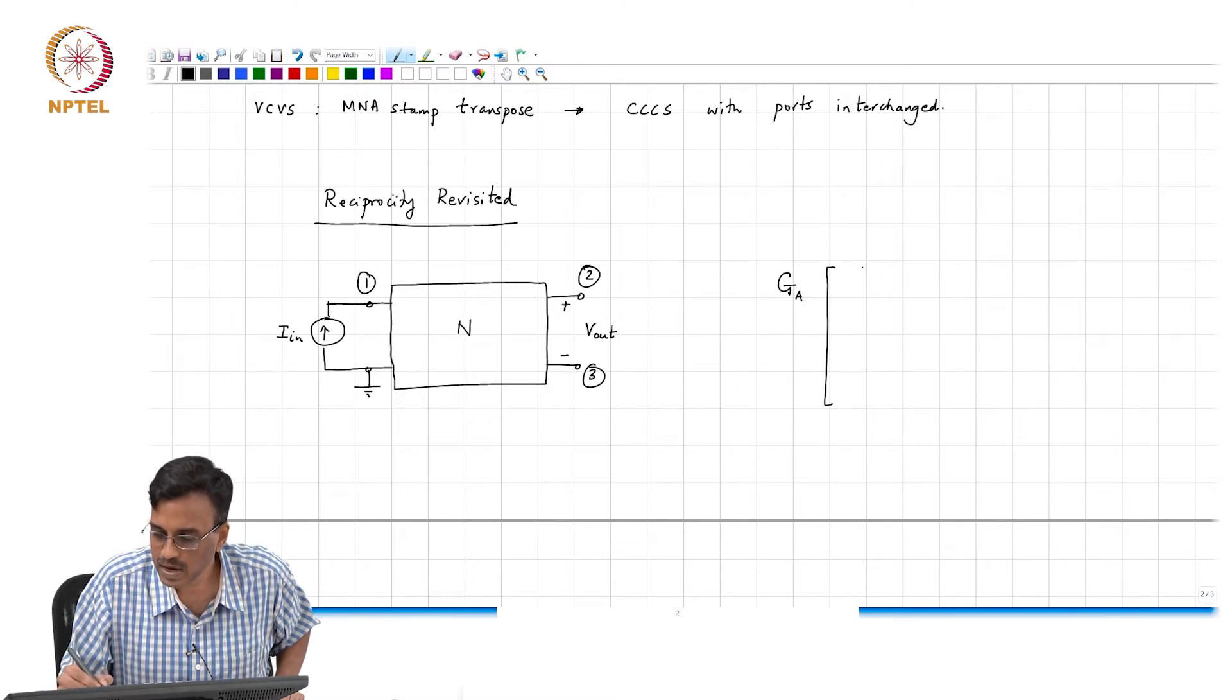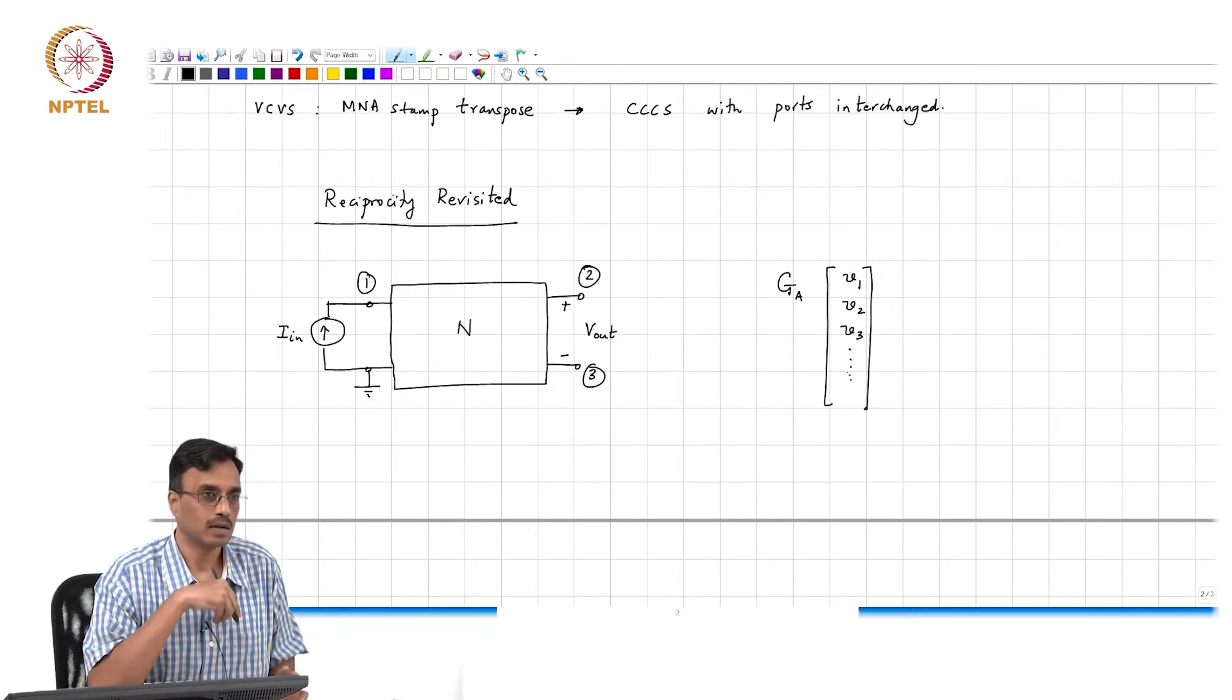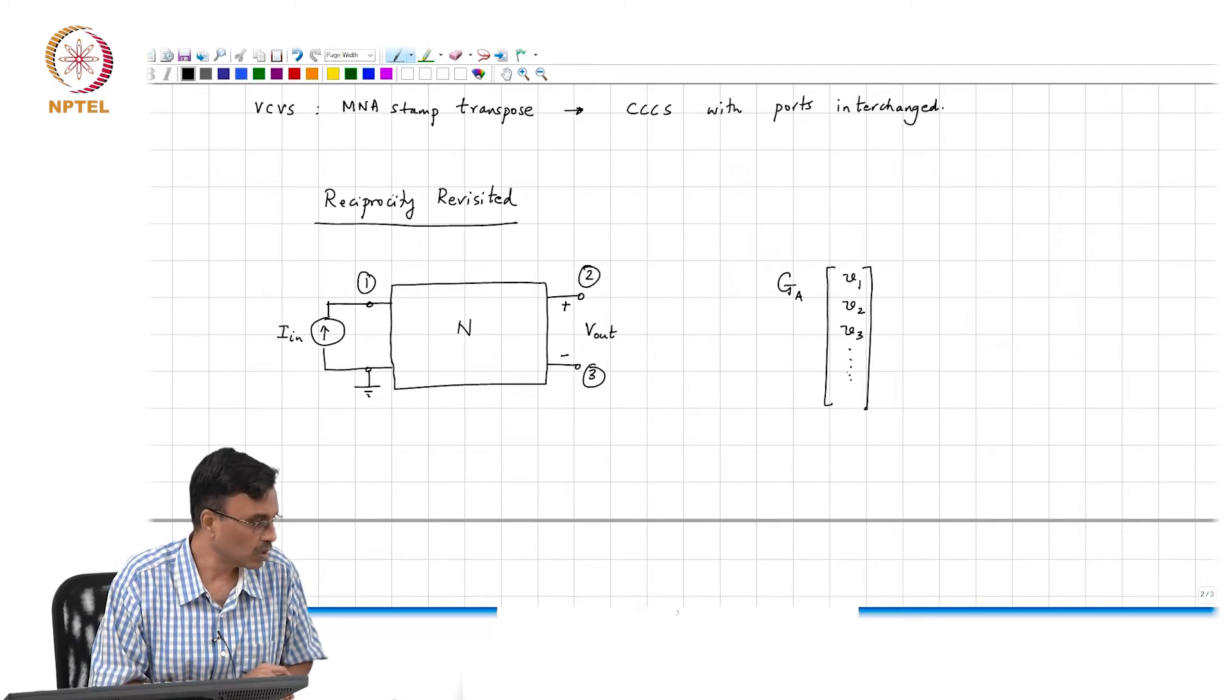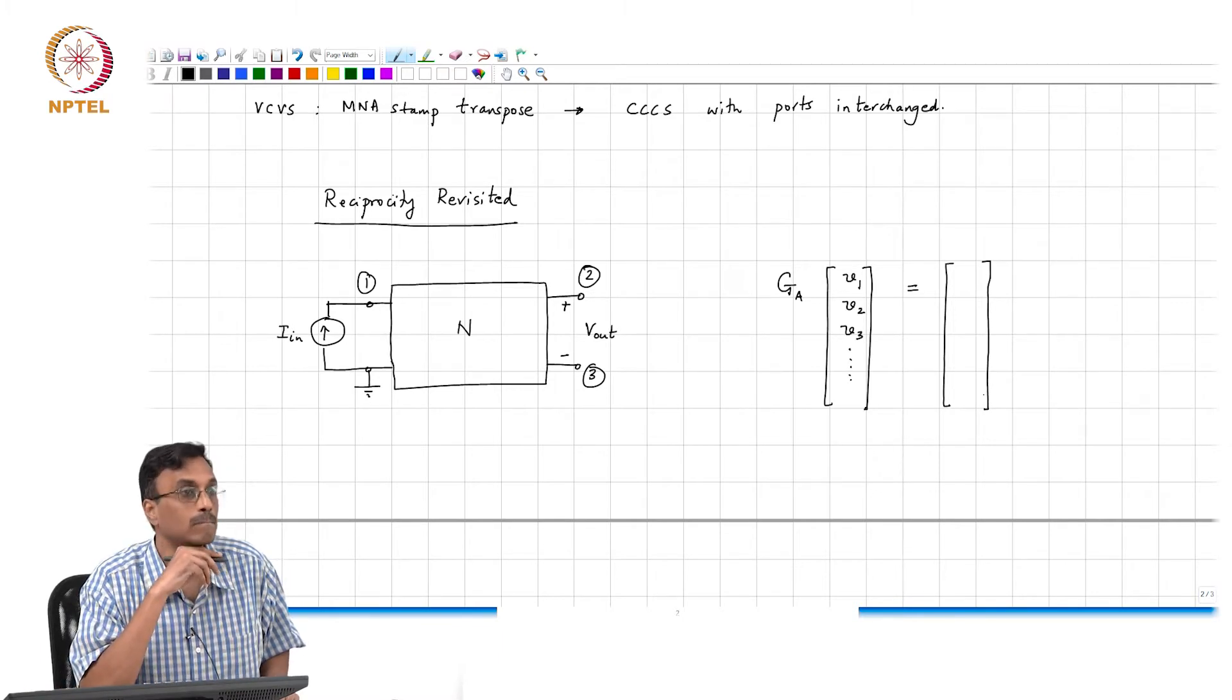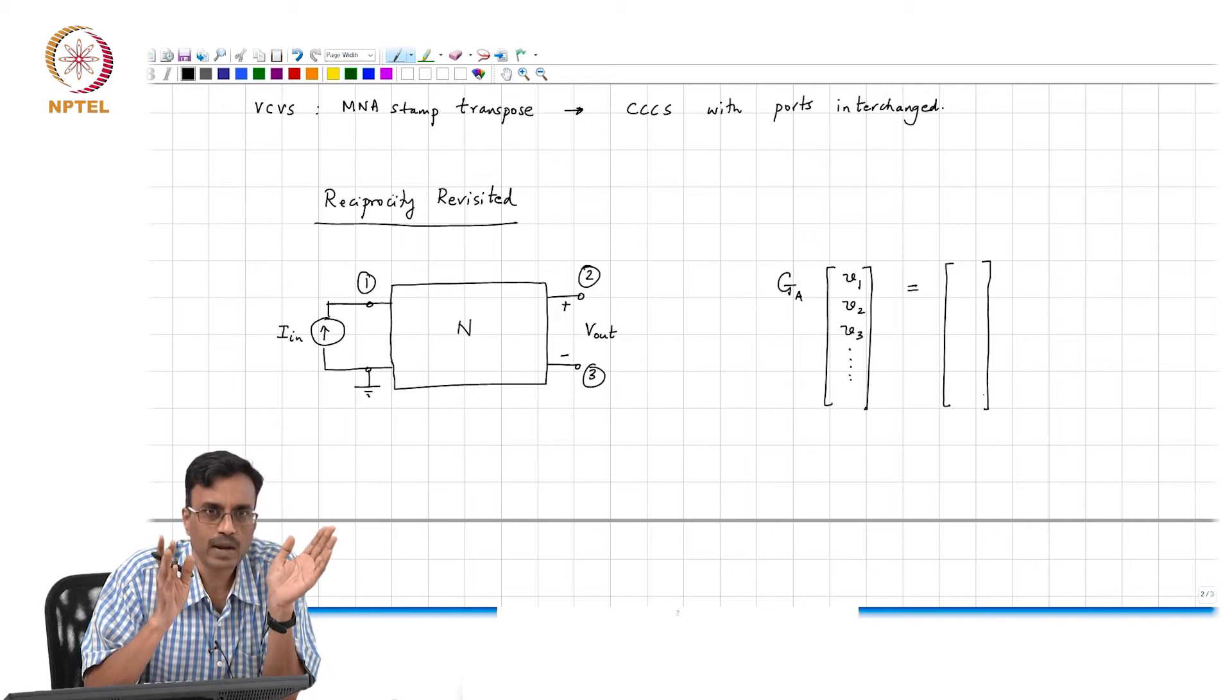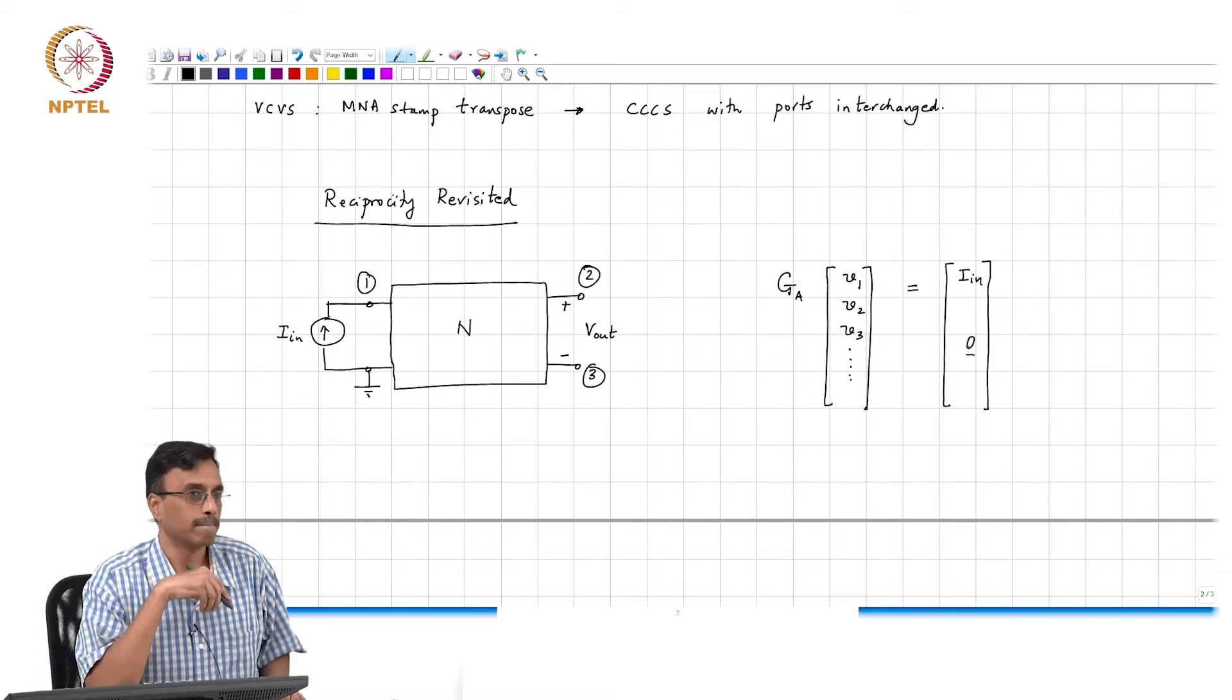And the unknowns will be all the node voltages and the currents through all the controlled sources or the zero voltage sources inside the box. The unknowns will be of this form: they will be V1, V2, V3, and so on. G_A is the augmented conductance matrix which we are now in a position to determine by simply adding up the MNA stamps of the individual elements. And this must be equal to what must be there on the right? All the independent sources. What are the independent sources here? There is only one independent source, namely I_in. So basically that just goes into node 1, the rest of this vector is basically 0.